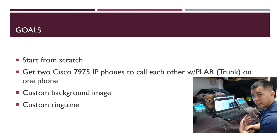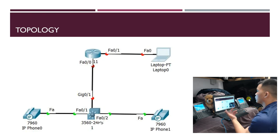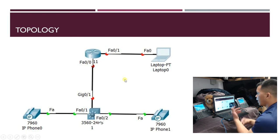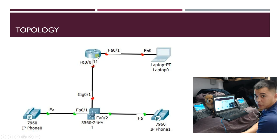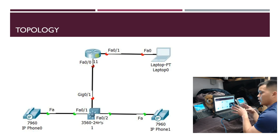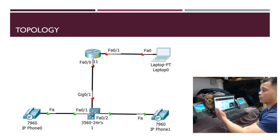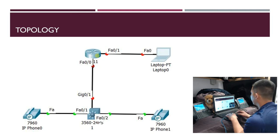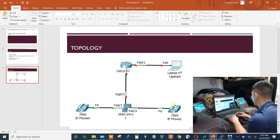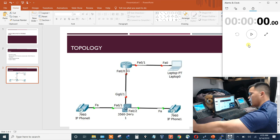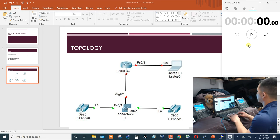I'm going to do this all at once, as fast as I can. Our topology is a 2811 ISR router, a 3560 POE switch with two IP phones, and my laptop connected to it. The laptop is going to serve as a TFTP server to get the initial files onto the 2811 router, so it can then act as a TFTP server for the IP phones.